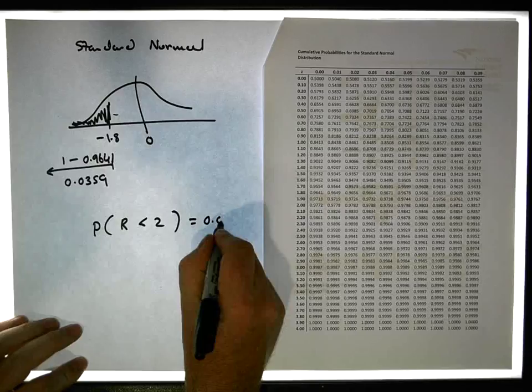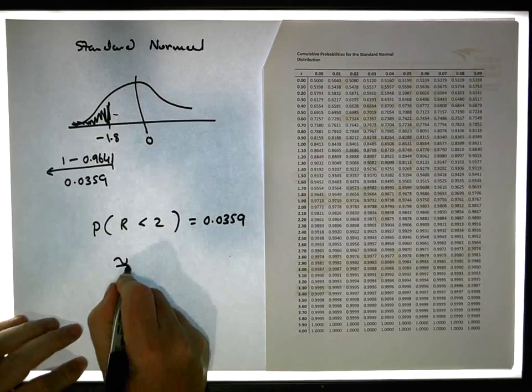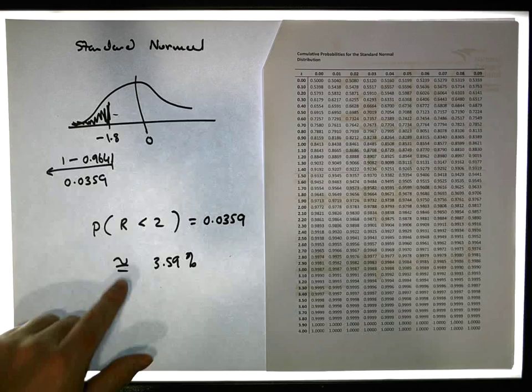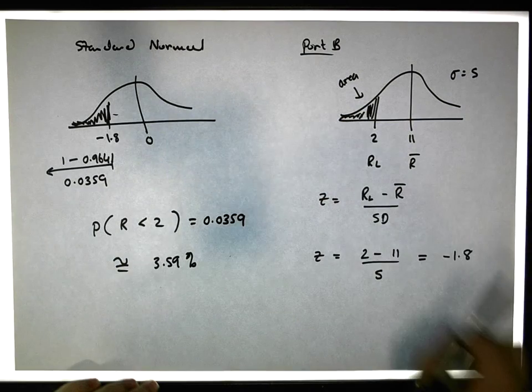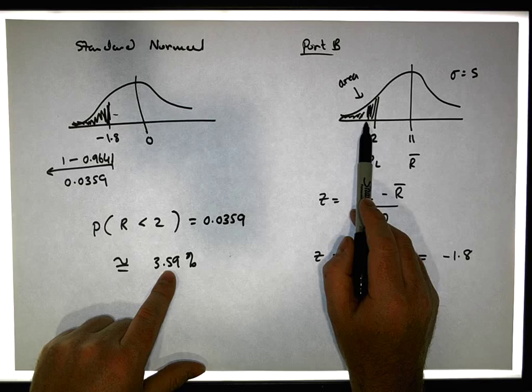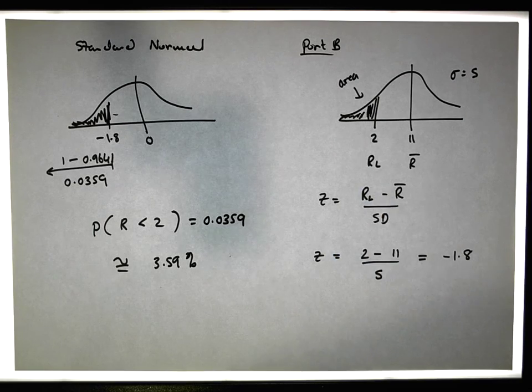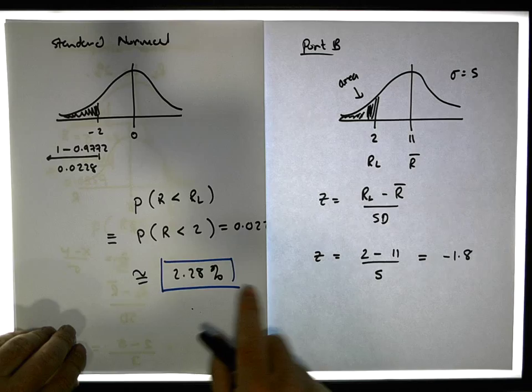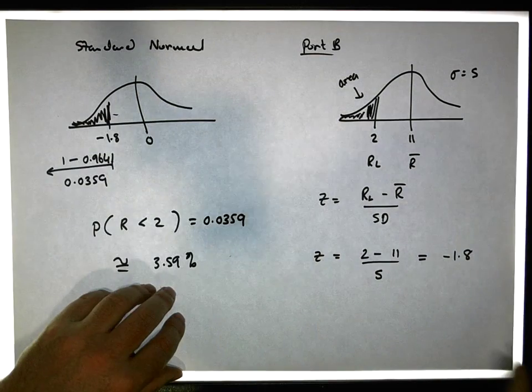So in this case, for portfolio B, the probability of a return being less than 2 is equal to 0.0359, approximately 3.59%. So you will drop below 2 approximately 3.59% of the time. Keep in mind that with portfolio A, we'd only drop below 2 percent 2.28% of the time.